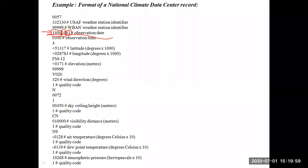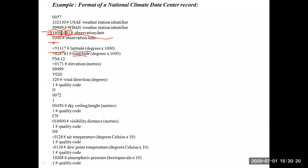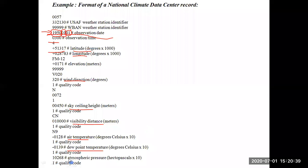The observation date field shows: the first four digits indicate the year — for example 1950; next two digits indicate the month — 01 for January; next two indicate the date. Then there is a time field. Other fields include latitude, longitude, wind direction, sky ceiling height, visibility distance, air temperature, dew point temperature, humidity, and atmospheric pressure. Many points will be there in each line record.